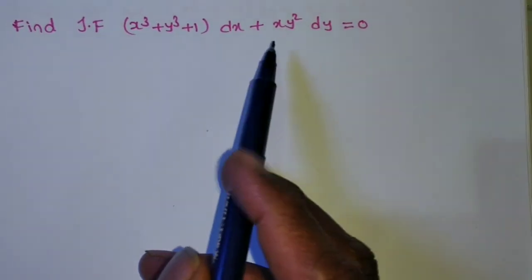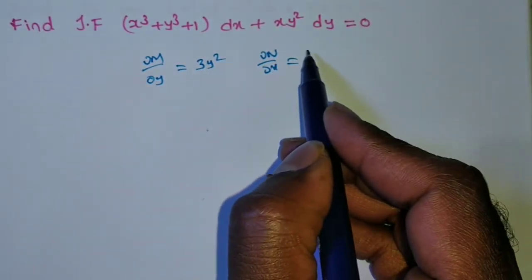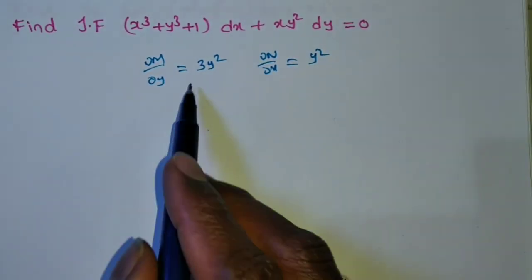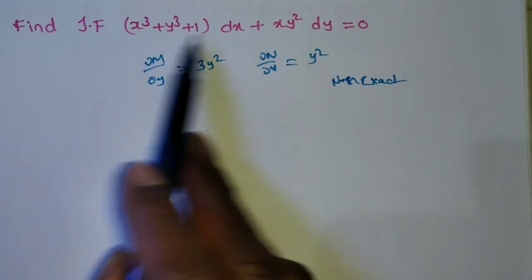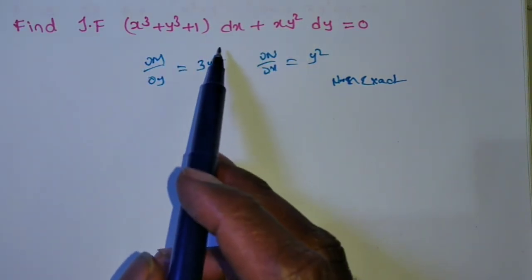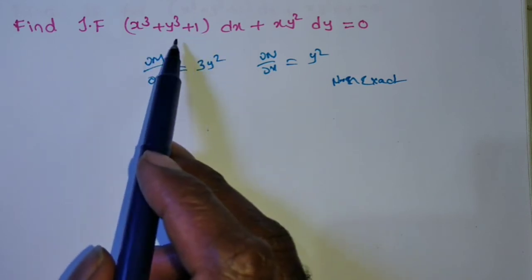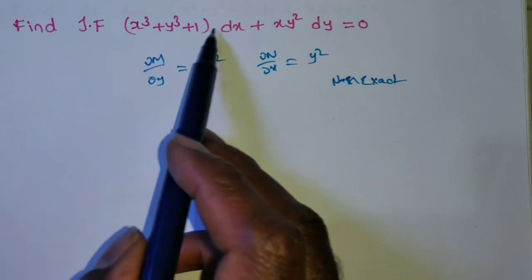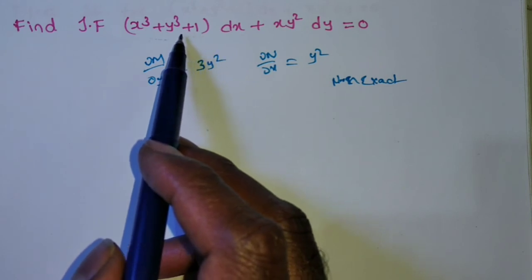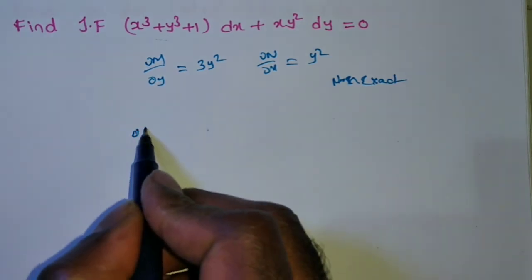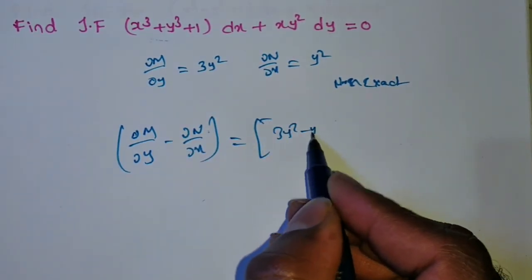One more problem: given M dx + N dy, check ∂M/∂y and ∂N/∂x. Using x·y² as constant: both are not equal, so non-exact. Inspection not possible; degree 3 vs degree 3 but x⁰ terms make it non-homogeneous; Rule 3 — y·f(xy) doesn't fit. So apply Rule 4/5.